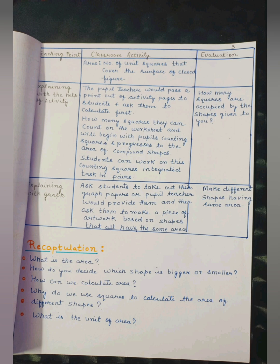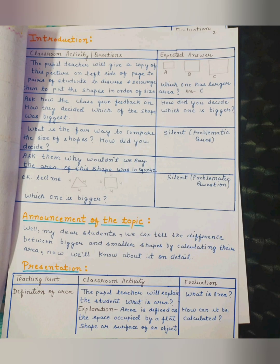Now we will introduce the topic. Introduction Classroom activity questions: The teacher will give a copy of this picture on left side of page to pairs of students to discuss and encourage them to put the shapes in order of size.